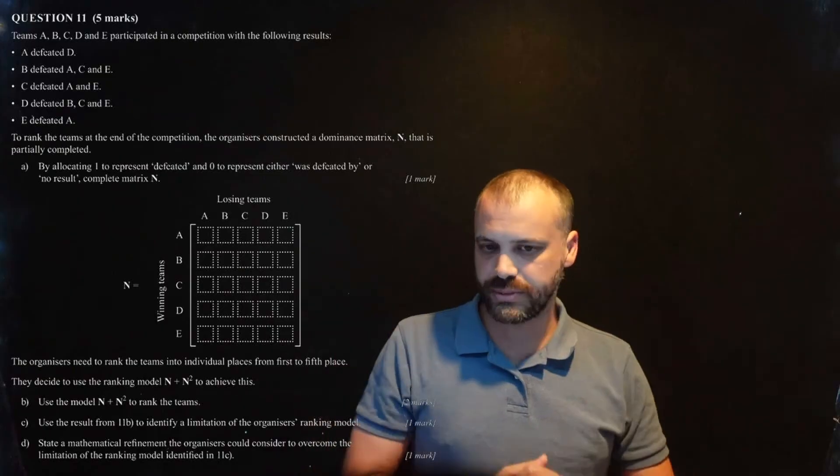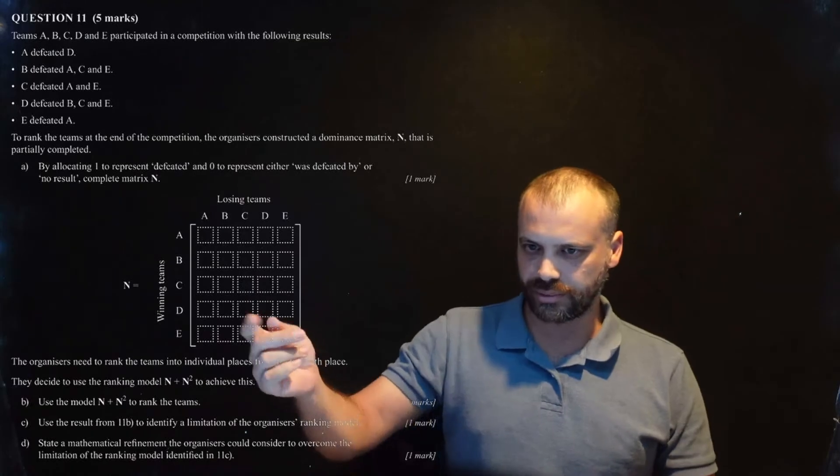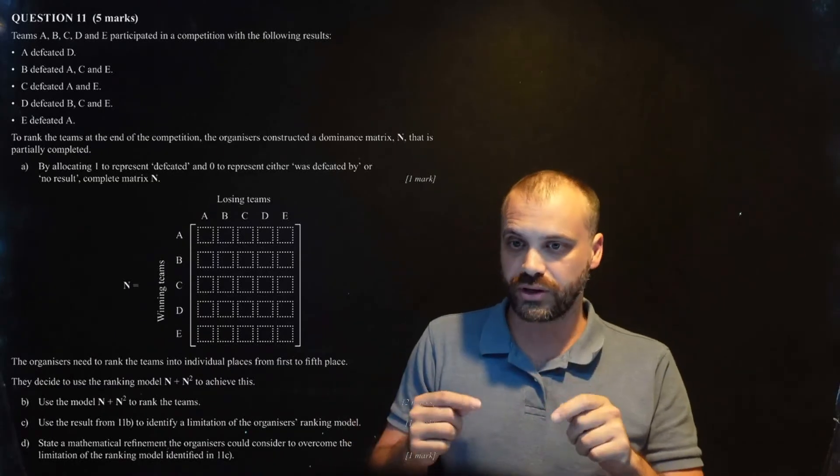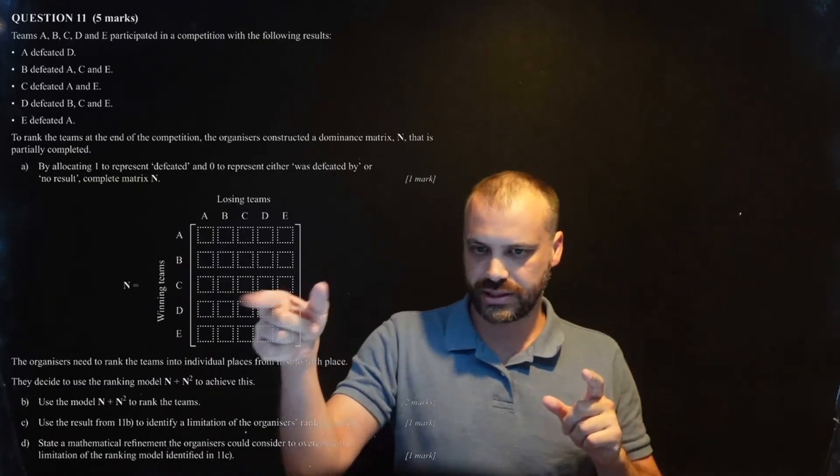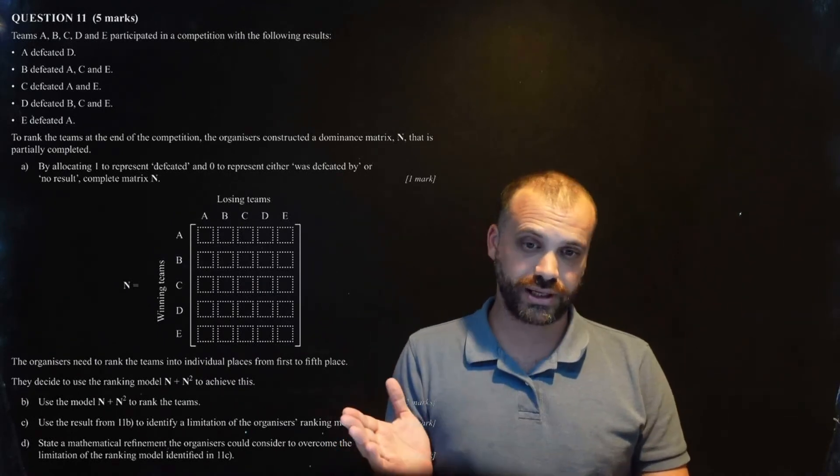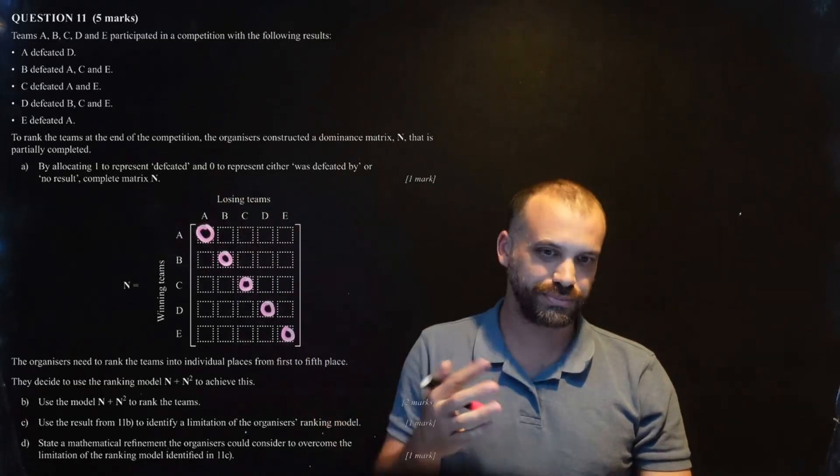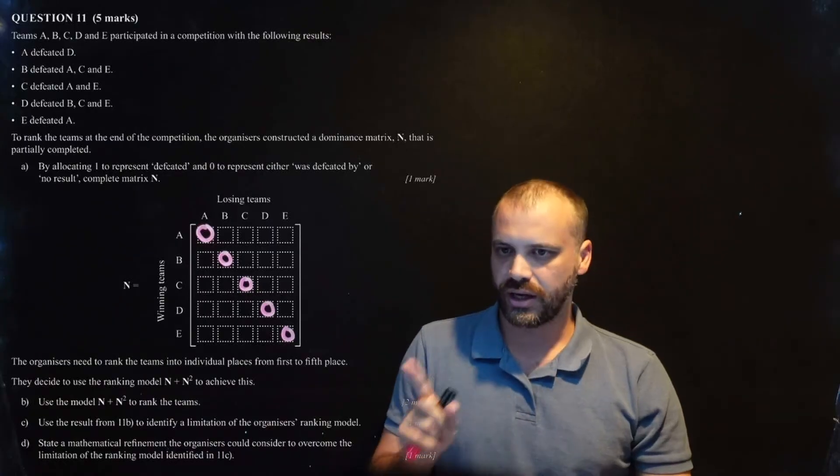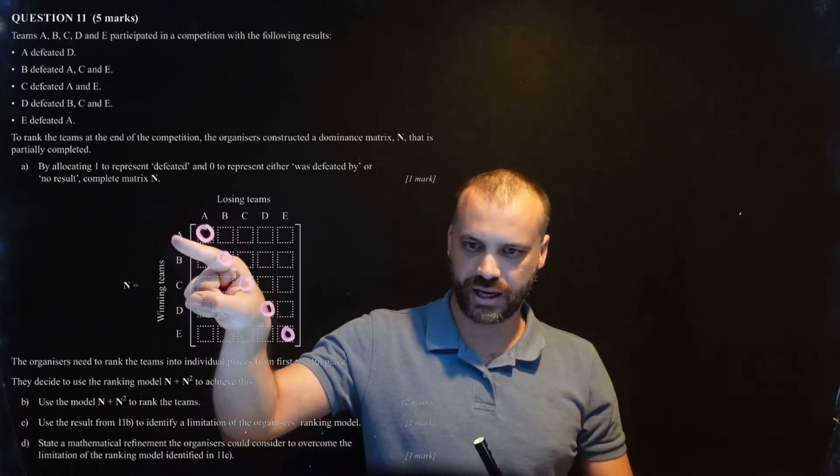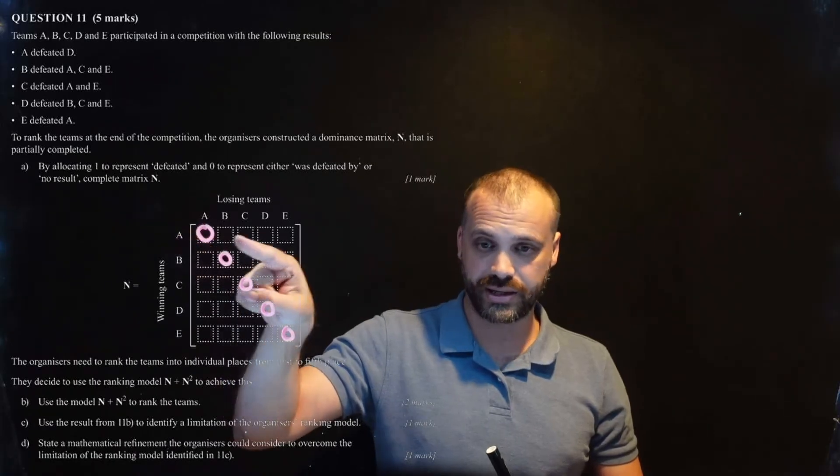Okay, here we are. Dominance matrices. Everyone's favorite. Relatively easy stuff. Okay. So, all blah, blah, blah. Part A. By allocating 1 to represent defeated. And 0 to represent either was defeated by or no result. Complete this matrix. Okay. There is something I can do straight away every time I come to a dominance matrix. I can put 0s in that diagonal. Because teams don't play against themselves. Okay. Straightforward. Now, A defeated D. The way that that works is I find A. I find D. Alright. I start with the one that won.